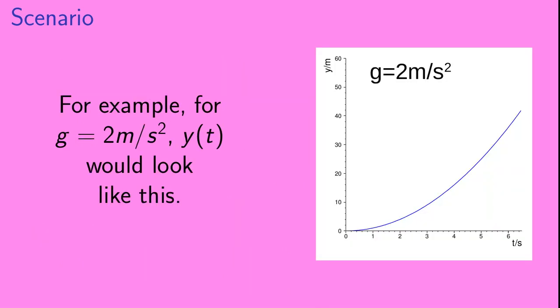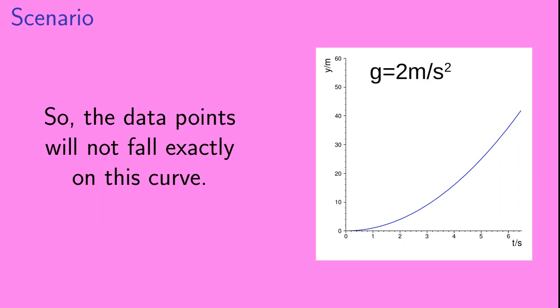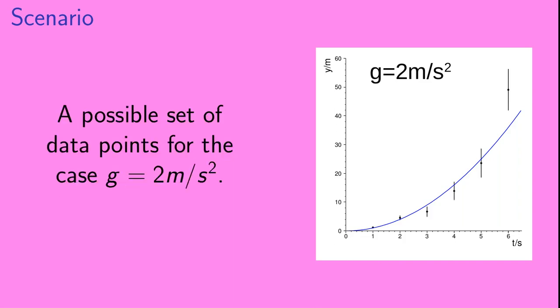Okay, so for example, if g were to equal 2 meters per second squared, the function y of t would look like this. Now, if we measure the positions y of t, our measurements will have some uncertainty. And this means that the data points will not fall exactly on this curve. So here's an example set of data points that we might acquire in the case that g is equal to 2 meters per second squared.